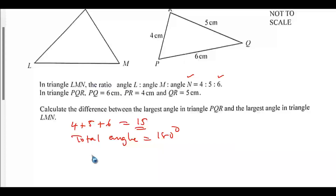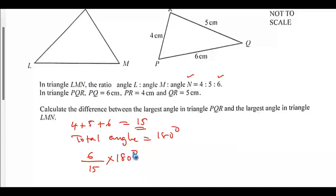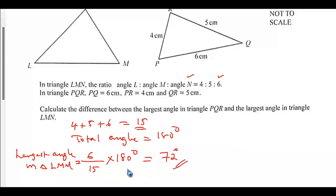So the largest angle is given by the ratio of 6 over the total ratio of 15, multiplied by 180 degrees. If you input this into a calculator, you get 72 degrees. So the largest angle in triangle LMN is 72 degrees.